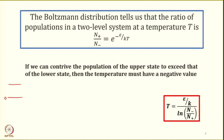Let us write down these two states. The ground state is at energy 0 and the upper state is at energy e. Let the population in the upper state be n_plus and in the lower state be n_minus. Then n_plus divided by n_minus equals exponential of minus e over kT. This is the expression for the ratio of populations in a two-level system.